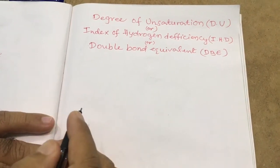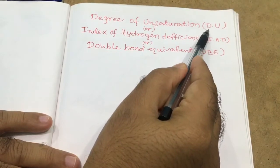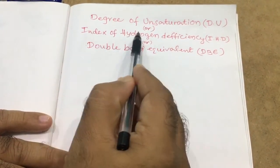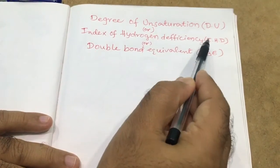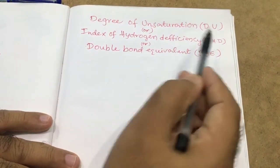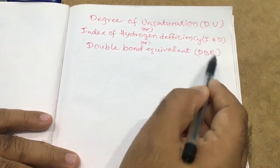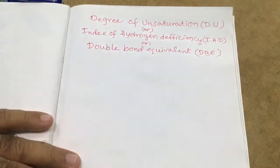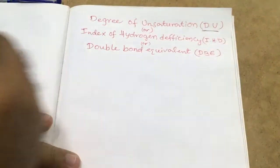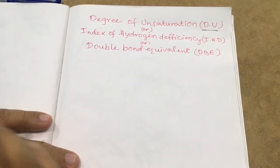Hi students, today I want to discuss the degree of unsaturation, that is DU. It is also called index of hydrogen deficiency, IHD, or double bond equivalent, DBE. Generally in most cases we use DU, or sometimes it is also called U, that is unsaturation.